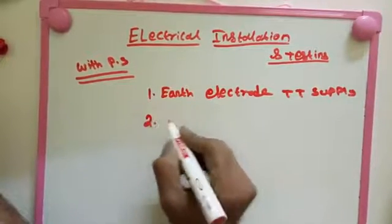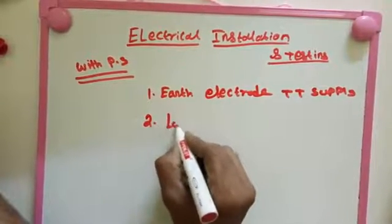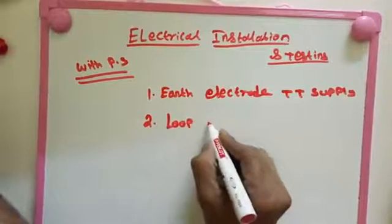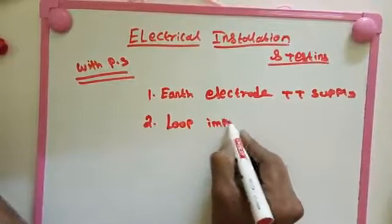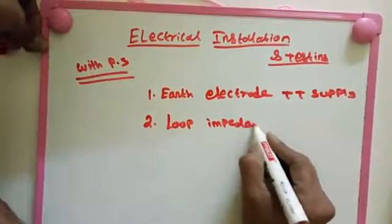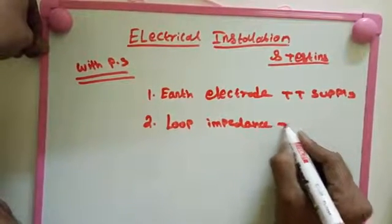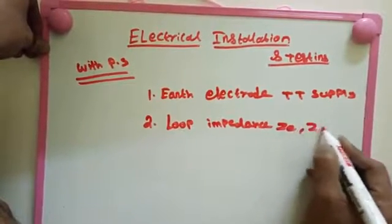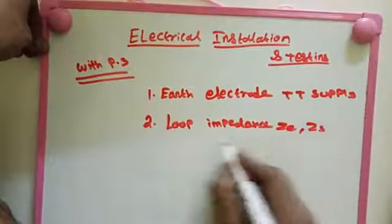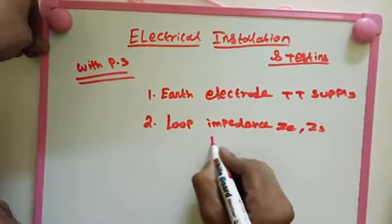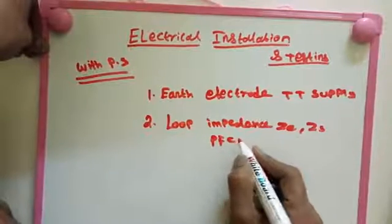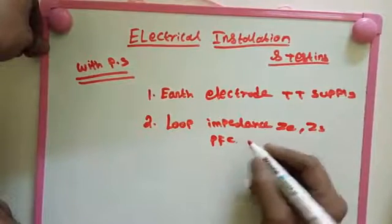And then second one is loop impedance. Loop impedance we check for externally and internally also. As per parallel, we check for PFC, prospective fault current.